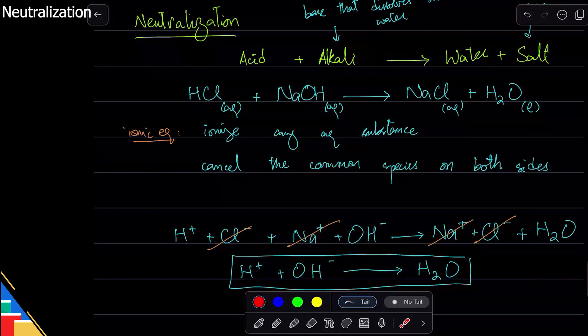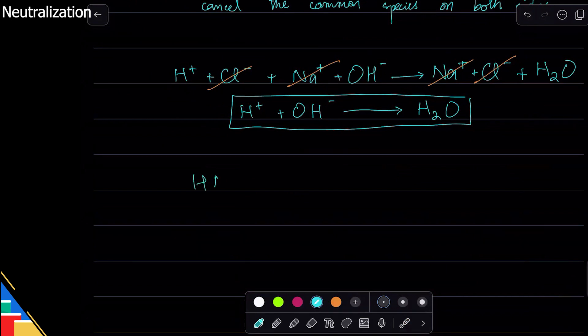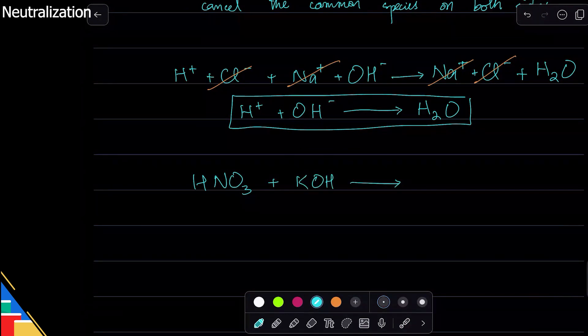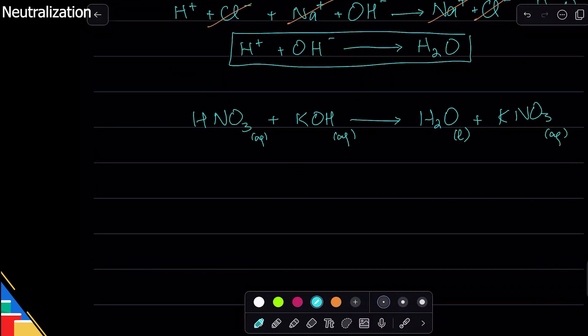Let me give you an example you can do yourself. I have HNO3 and I react it with potassium hydroxide. First of all, complete the equation—what will be formed? H2O plus potassium nitrate, excellent. H2O plus potassium nitrate. Now this is aqueous, aqueous, liquid, aqueous.